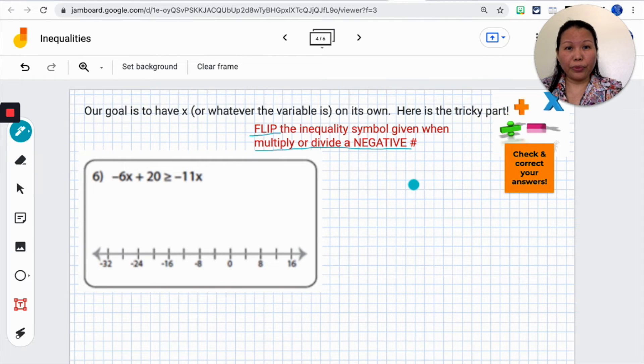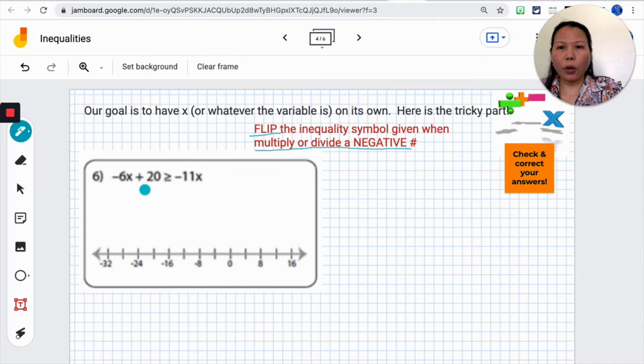What happens if you multiply or divide a positive number? It stays the same as we demonstrated in the earlier problem. With number 6, let's go ahead and solve it.